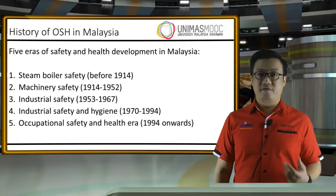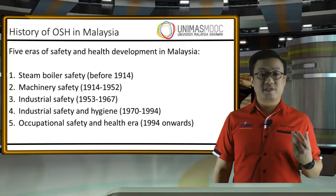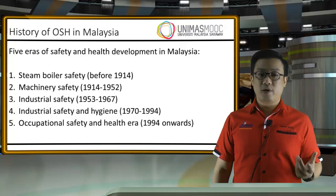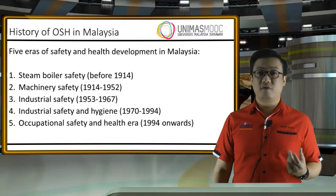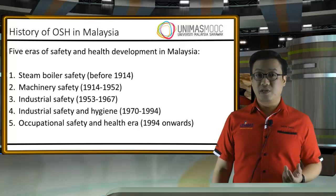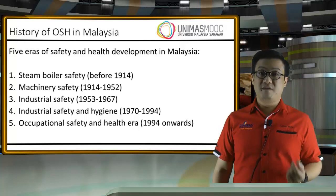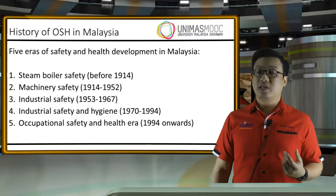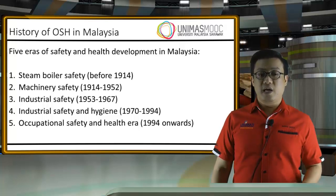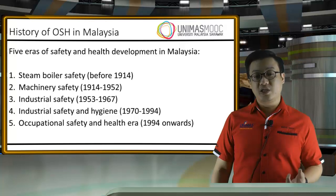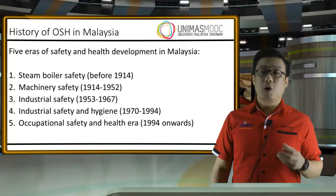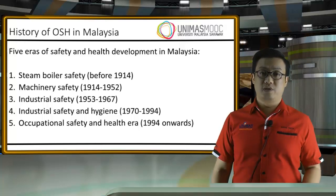When it comes to the history of OSH in Malaysia, there are five areas of safety and health development. The first is steam boiler safety, before the year 1914. Next is machinery safety, from 1914 to 1952, followed by industrial safety from 1953 to 1967. Then industrial safety and hygiene from 1970 to 1994, and finally the Occupational Safety and Health Era from 1994 onwards.